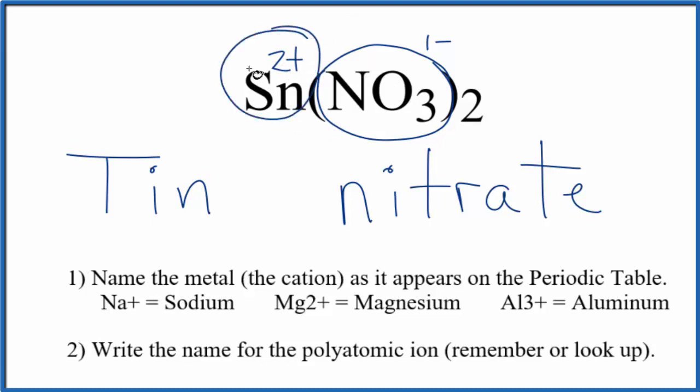So to show that tin is two plus, we put the Roman numeral two in parentheses, so we have tin two nitrate. So the name for Sn(NO3)2 is tin two nitrate. And we need two of these nitrate ions here, so the charge balances out on the tin.